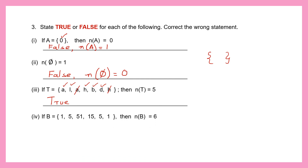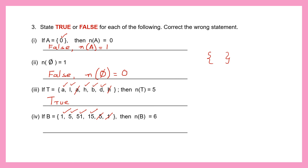Statement 4: If set B = {1, 5, 51, 15, 5, 1} then the cardinal number of set B is 6. Let's check — no repetition allowed. So: 1, 5, 51, 15 — 5 is already there, 1 is already there. That gives only 4 unique elements. But the statement says the cardinal number is 6, which is wrong. This statement is false. The correct statement is: the cardinal number of set B is 4.